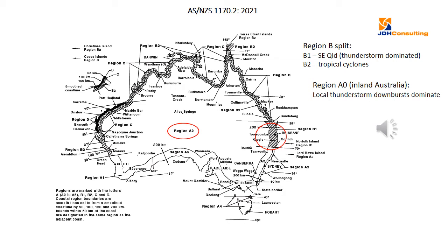The new map of Australia in the 2021 version shows the new regions A0 and B1 highlighted in red. Region A0 is an inland region, basically 200 kilometres from the smooth coastline all around Australia — dominated by severe downbursts from thunderstorms, so large-scale synoptic winds have less effect. Along the southern and eastern coastlines, there's a mixture of large-scale pressure systems producing winds that blow for most of a day, and occasionally severe thunderstorms as well, so both types of events need to be accounted for.